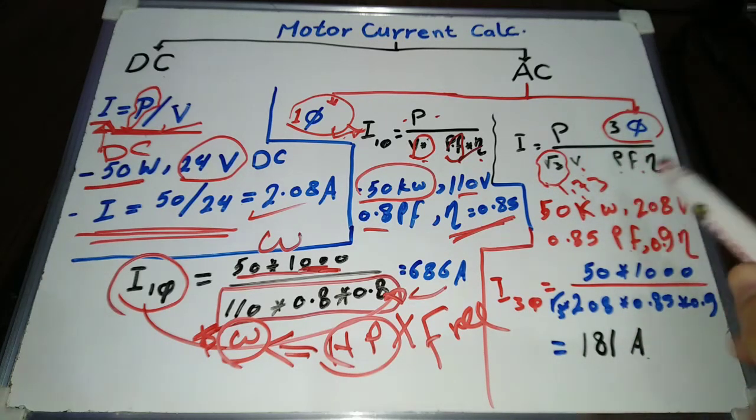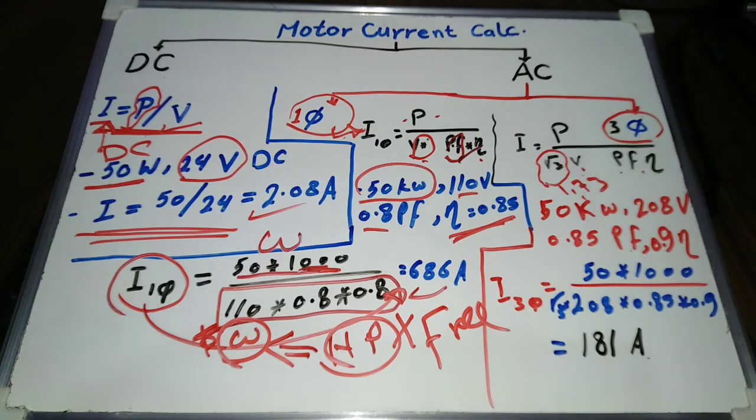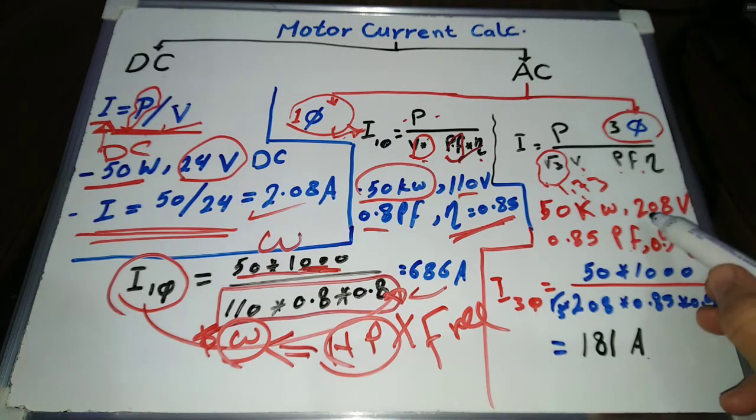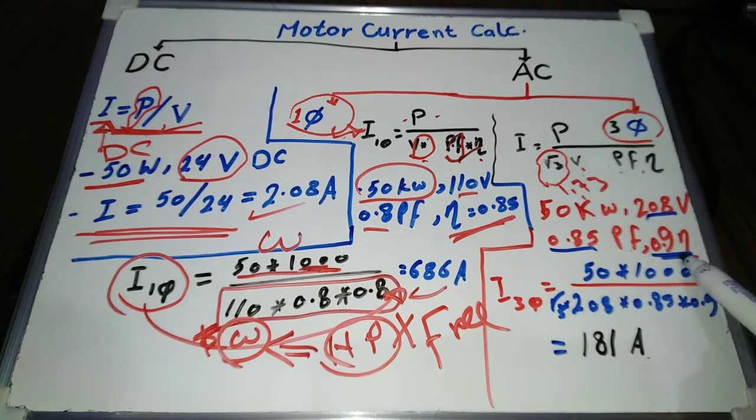Let's have an example, but in this case a three phase motor: a three phase 50 kW motor, 208 volts, 0.85 power factor, and 0.9 efficiency.